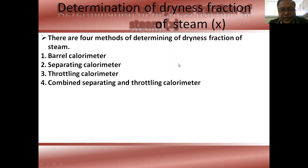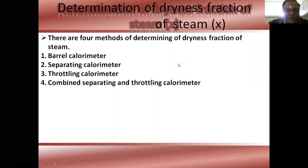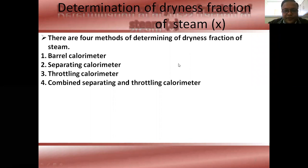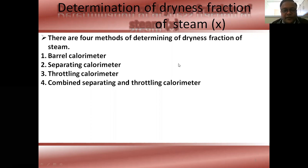Under conditions between 0 and 100 percent: for example, 10% dryness fraction means 10% is steam and 90% is water; 20% means 20% is steam particles and 20% is water. There are four methods of determining the dryness fraction of steam: first is the barrel calorimeter, second is the separating calorimeter, third is the throttling calorimeter, and fourth is the combined separating and throttling calorimeter.